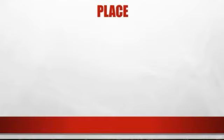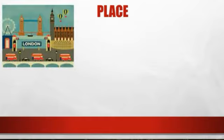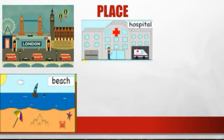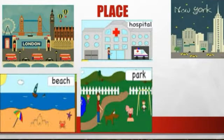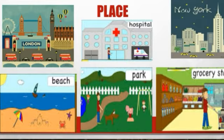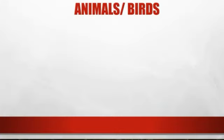Nouns can also be names of places. This may include names of countries, cities, societies, neighborhoods, and other places. For example: London, beach, hospital, New York, park, grocery store, etc.